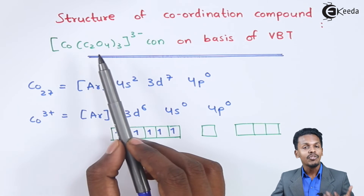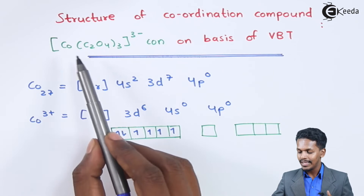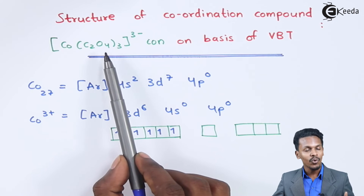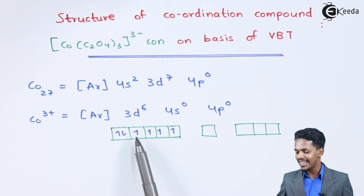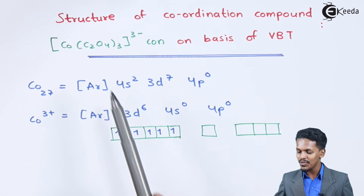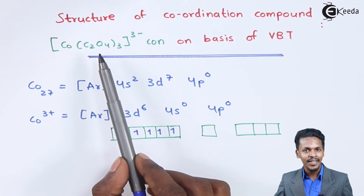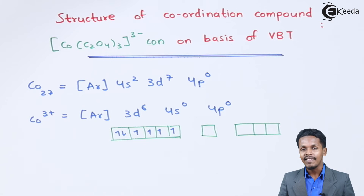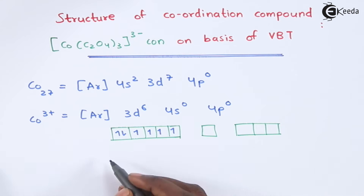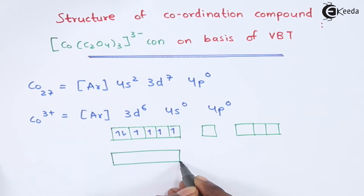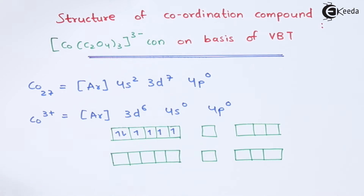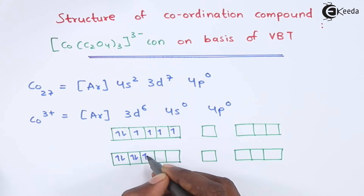We also understand that there are 3 moles of oxalato ligands surrounding the cobalt. The C₂O₄ ligand is basically a strong field ligand. Because of the approach of C₂O₄ — and also 3 moles of it — the unpaired electrons will get paired up, and this is nothing but spin pairing.